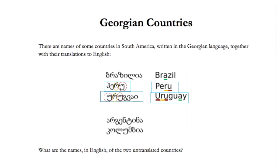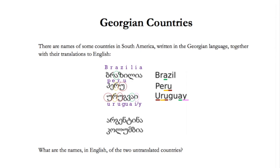We take a look at letter A — it appears in Uruguay and Brazil. By comparing and contrasting, we know letter A is this symbol, and therefore Y is this symbol.